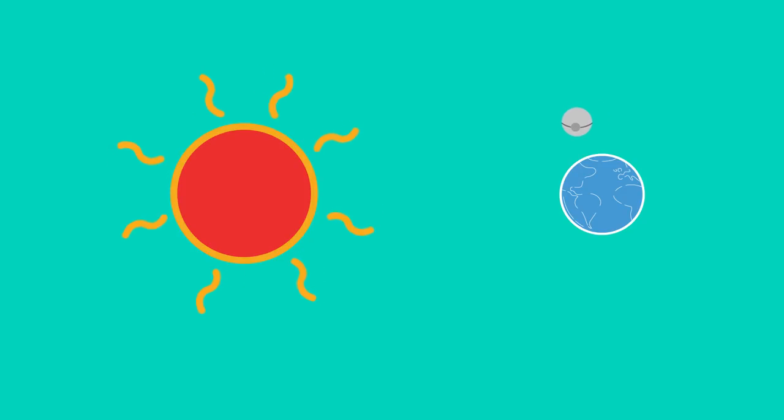During a solar eclipse the moon passes between the sun and the earth. Light travelling in a straight line cannot pass through the opaque moon and so a shadow is cast on part of the earth.